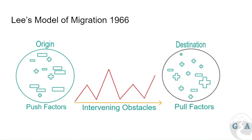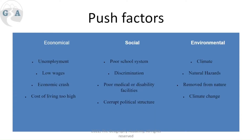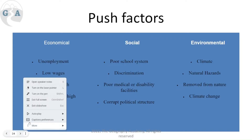Rural to urban migration — we can take the push and pull factors from section one, where we covered push and pull factors and intervening obstacles. Let's look at some of the push factors here. A couple will be similar but some will be a little different. Usually push factors from rural to urban come down to a few key ones, with economics being the main driver.